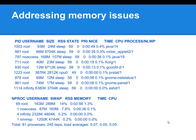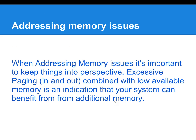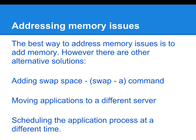prstat is another command you can use to get basic process information. You can see the amount of swap a process is using, the amount of memory it's using, and the amount of CPU it's using. To add swap space, use swap -a.